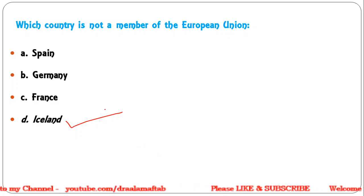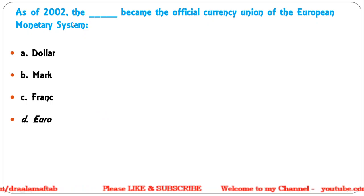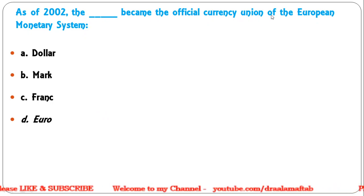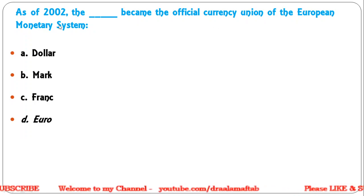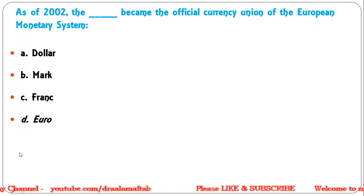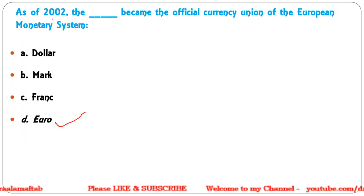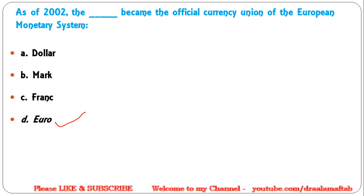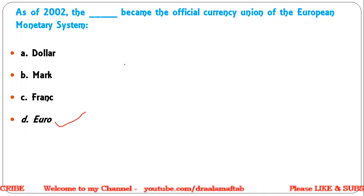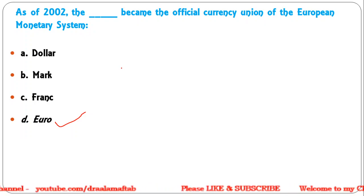Next: As of 2002, which became the official currency of the European Monetary System — dollar; mark; franc; euro? Correct answer is euro. The euro was introduced in 1999 as an invisible currency, and in 2002 currency notes and coins were fully implemented.